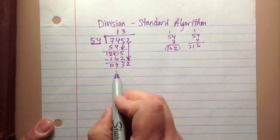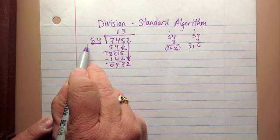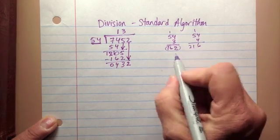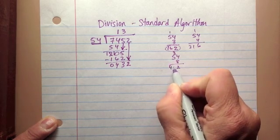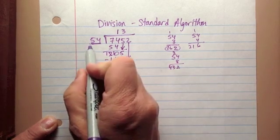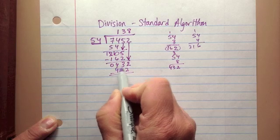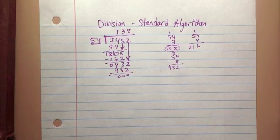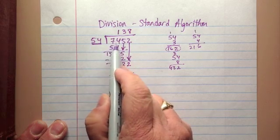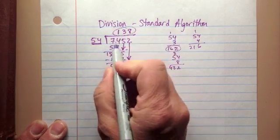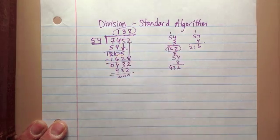I bring down the 2 and place it here, giving 432. Now I need to think about how many 54's I can find in 432. Estimating: 400 divided by 50 gives about 8 fifties. Let's check: 54 times 8 — 8 times 4 is 32, 8 times 5 is 40, plus 3 is 43 — equals 432. I have precisely 8 54's in 432, so I place 8 up here. 8 times 54 is 432, and 432 minus 432 is 0. I'm done — no remainders. There are exactly 138 54's in 7,452.